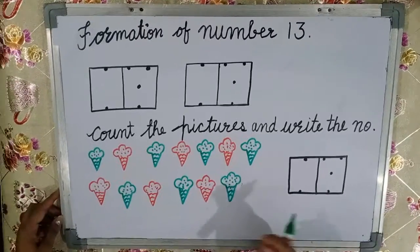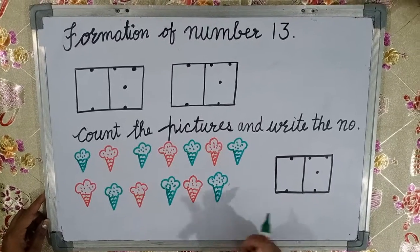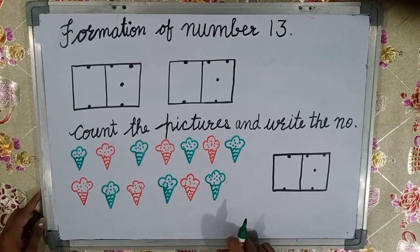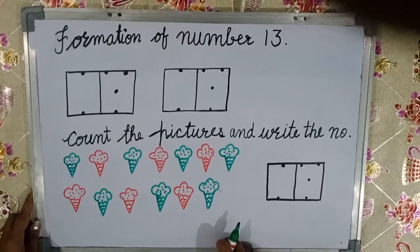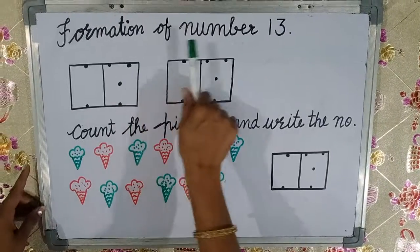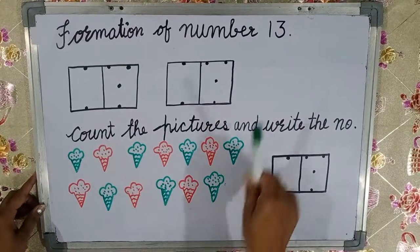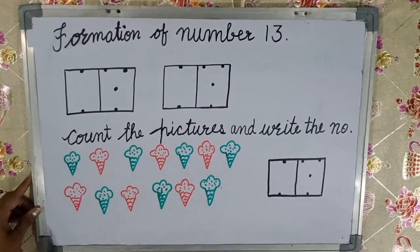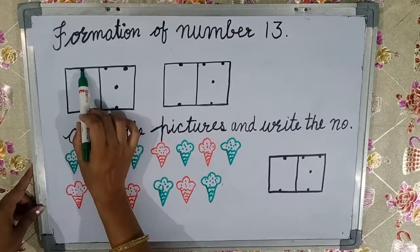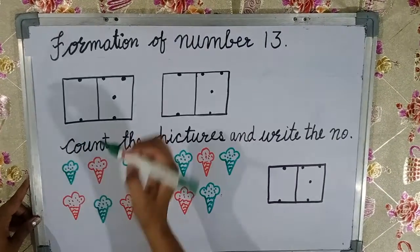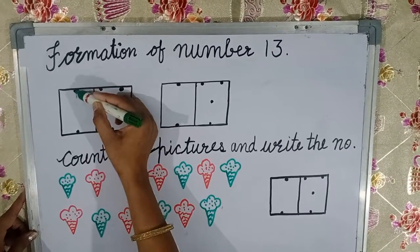Hello everyone, how are you all? I hope you all are fine. Today we will learn about the formation of number thirteen. For number one, we will put one dot here, one dot here, and make a standing line.